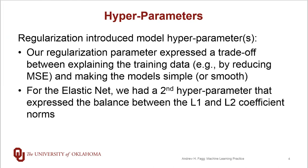Each one of these is an example of bringing in regularization when making choices about what the parameters should be. The way to think about regularization is that it's a way of expressing a trade-off between explaining the variances that exist in the training data and making models smooth or simple. Both lasso and ridge regression had a single parameter that allowed us to walk this line between variance and bias.